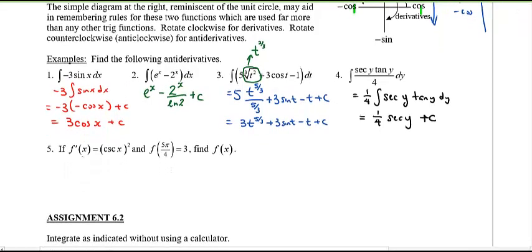And for number five, if I've got the derivative being the cosecant x all squared, hey by the way that's the same thing as cosecant squared x. And what's this? This looks like some initial condition. Can you find the function f(x)? So what is the antiderivative of cosecant squared x?